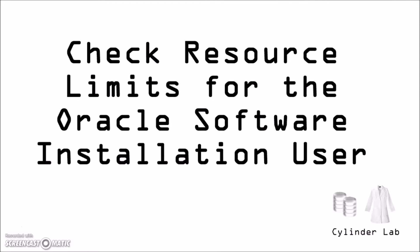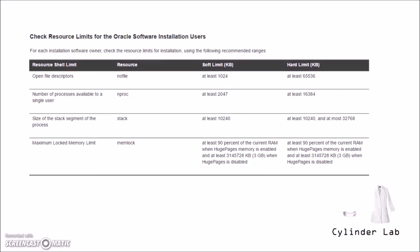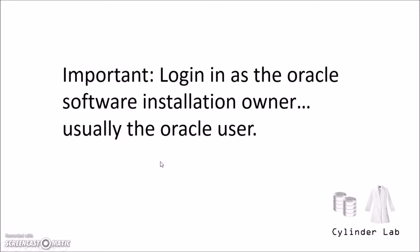Now we're going to have a look at resource limits for the Oracle software installation user — in our case, that's the Oracle user. The documentation talks about four different areas: no file (soft limit and hard limit), number of processes (soft limit and hard limit), stack (soft limit and hard limit), and then there's a blurb about memlock. We're going to go over these one by one.